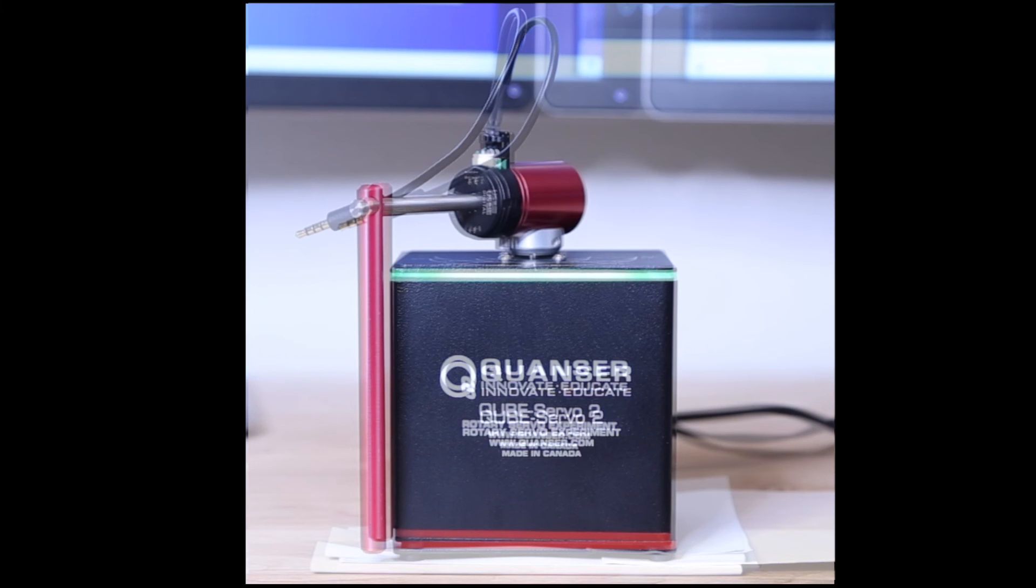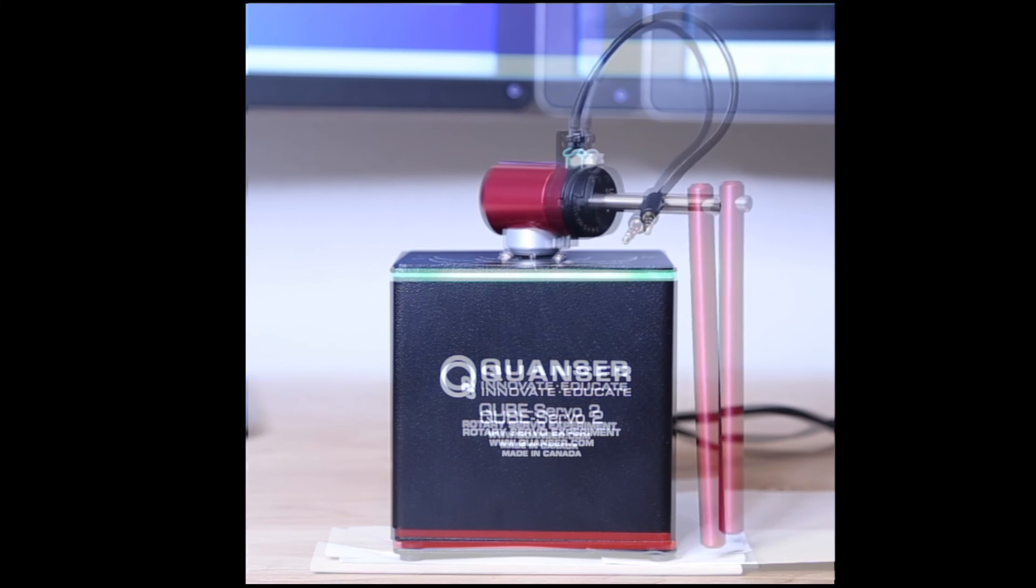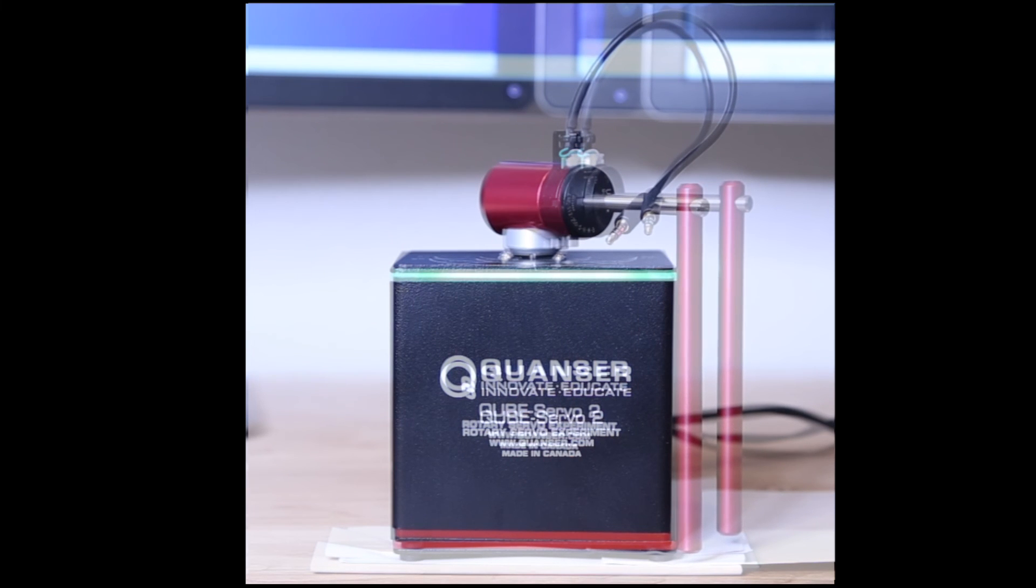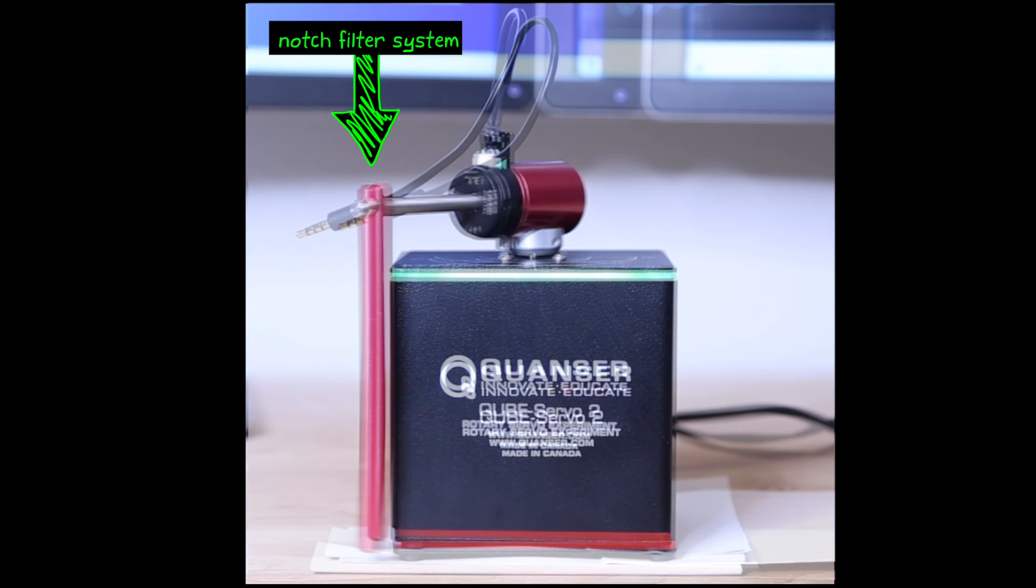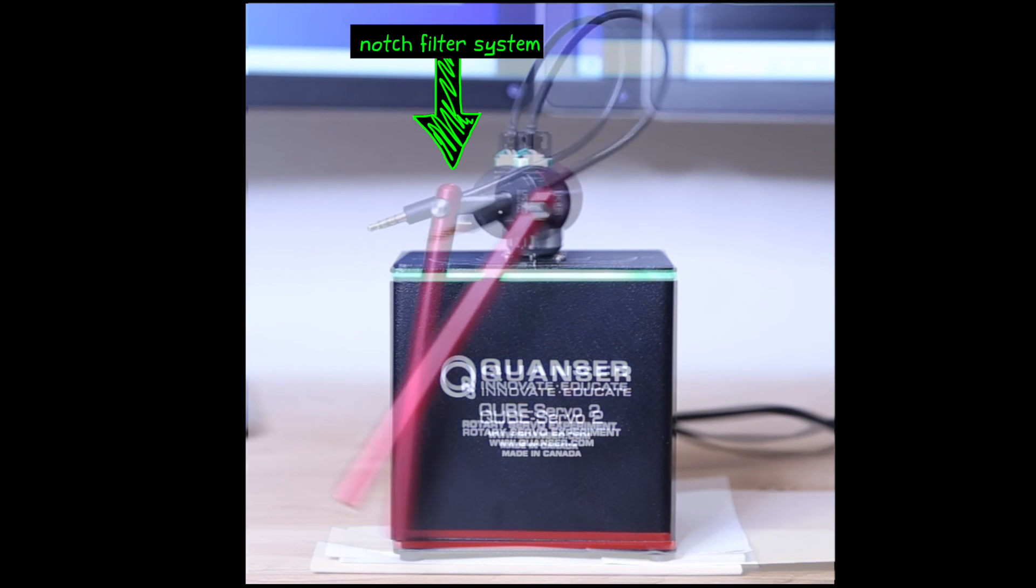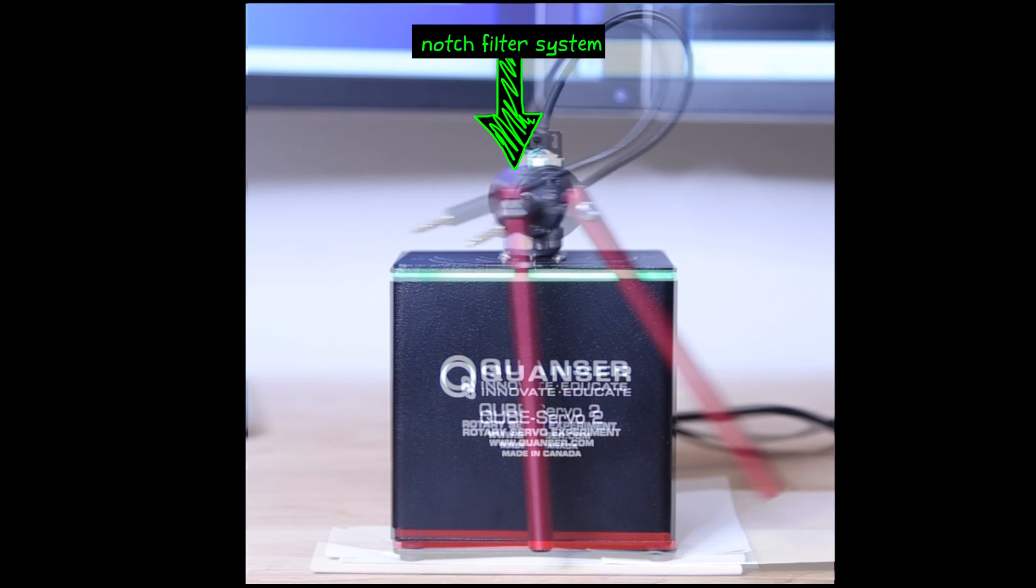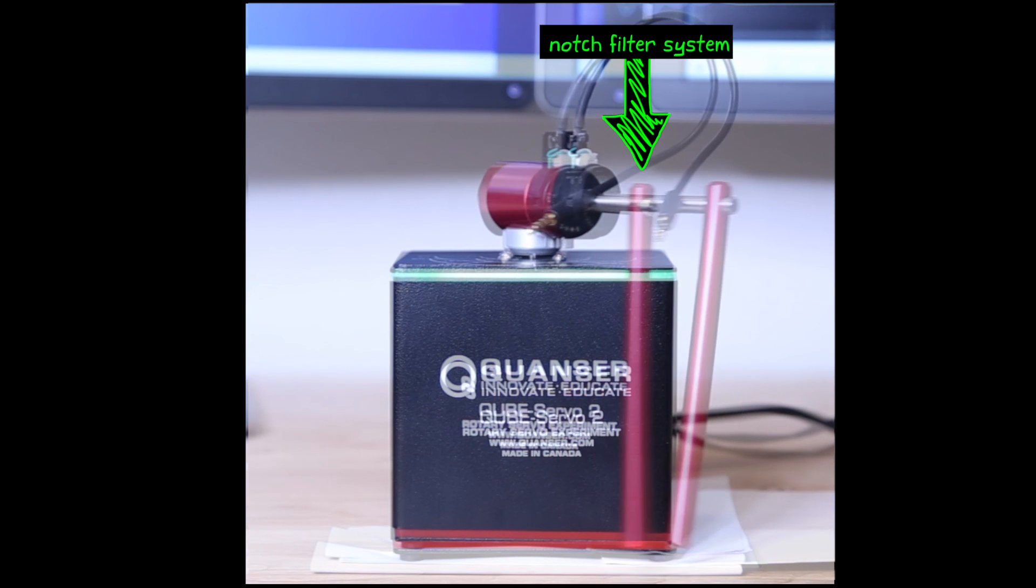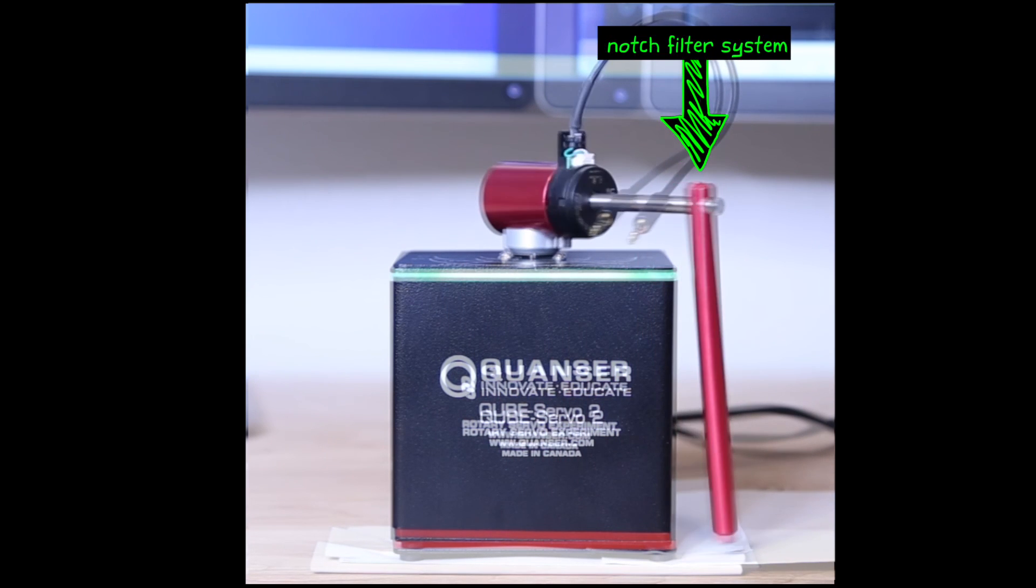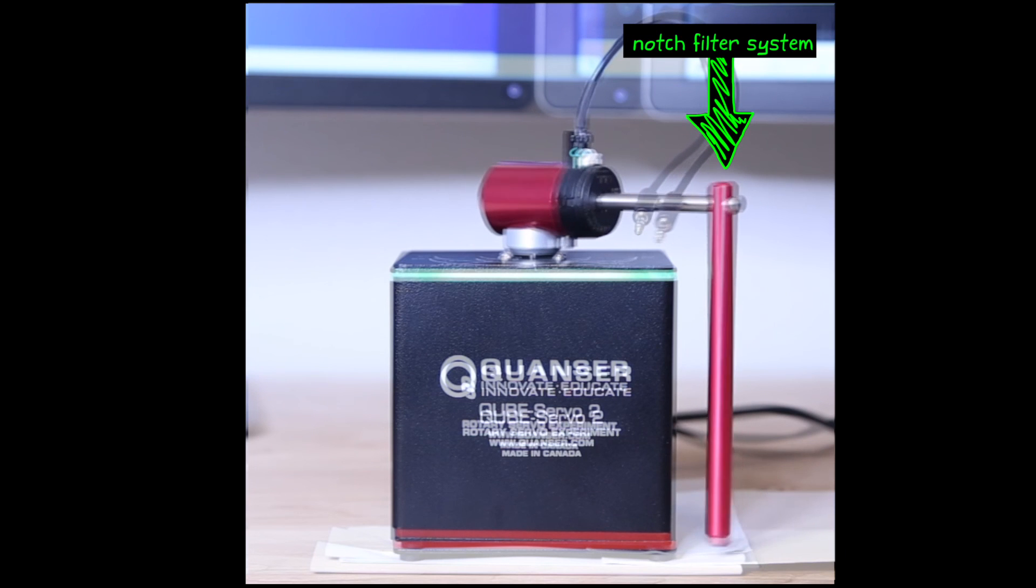We can look at the step response of the system without a notch filter, and compare it to the system with a notch filter in the feedforward path, and we can see how the two differ. And it might be a bit fast to see the difference, but if I slow it down you can clearly see that the notch filter causes the rotary arm to swing back and forth at the beginning, which causes the pendulum to oscillate less, and therefore allows the system to settle faster.